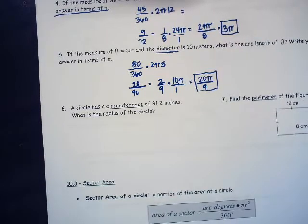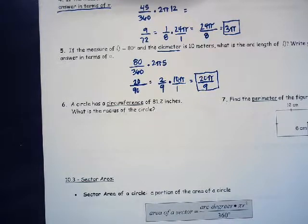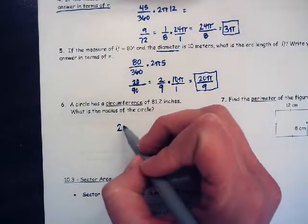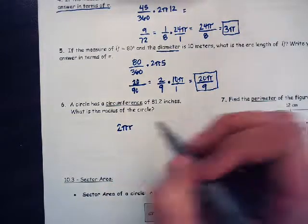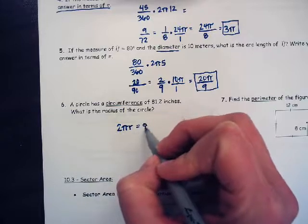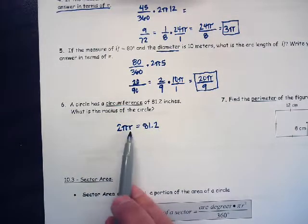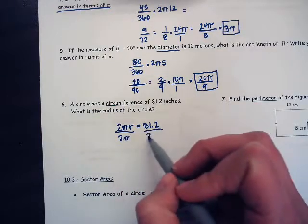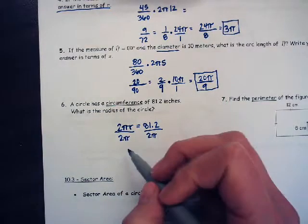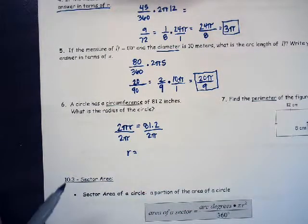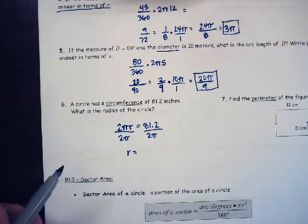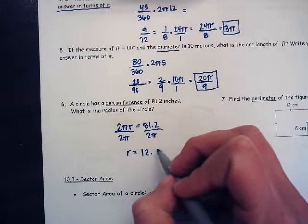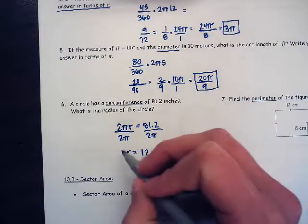Number six is a bit more challenging. The circumference is 81.2 inches — what is the radius? We know circumference equals 2 pi r, and when multiplied out this should give 81.2. To find r, divide both sides by 2 pi — because pi is just a number. So the radius equals 81.2 divided by 2 pi. Since the instructions don't say to leave the answer in terms of pi, we divide it out and get a decimal: 12.92 inches.